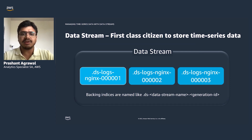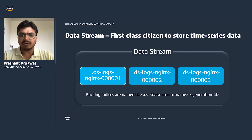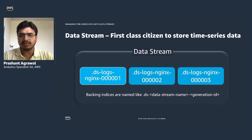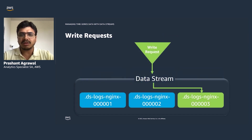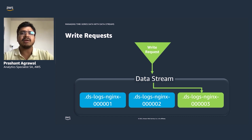Now let's look at how data streams work at a high level and how they solve these problems as a first-class citizen for storing time series data. A data stream has one or more auto-generated backing indices prefixed by .ds, then the data stream name and the generation ID — for example, .ds-logs-nginx-0000001 through 0000002 and 0000003. For any write operation, you send the request to the data stream and it routes it to the latest index. Once an index is rolled over, it becomes read-only and you cannot add new documents to it. If needed, you can run update-by-query or delete-by-query to modify or delete data from those older indices.